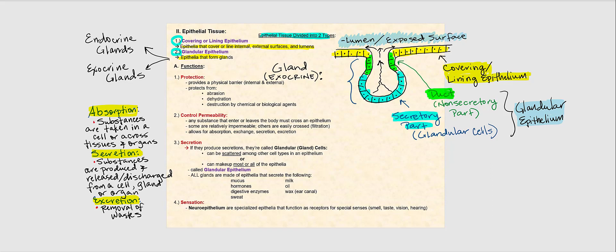There are two types of glands: endocrine glands and exocrine glands. After we go over the functions of epithelial tissue, we're going to focus on one of these glands, specifically the exocrine gland. But first, let's look at the functions of epithelial tissue.